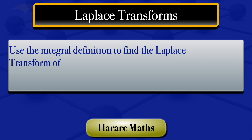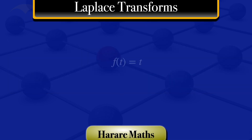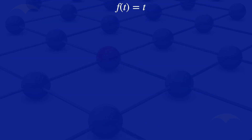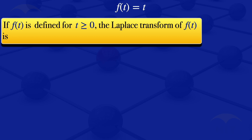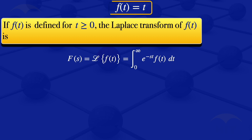In this tutorial we are going to use the definition to find the Laplace transform of f(t) = t. Given a function f(t) defined for t ≥ 0, the Laplace transform of f(t) is F(s) = the integral from 0 to infinity of e^(-st) times f(t) dt. Since f(t) = t, we substitute it into the formula and obtain the integral from 0 to infinity of e^(-st) times t dt.